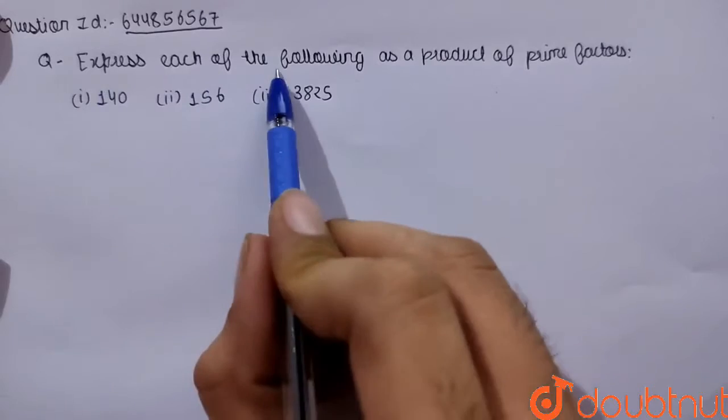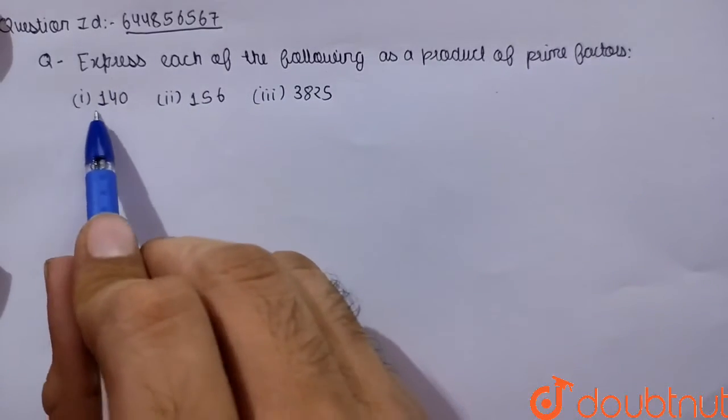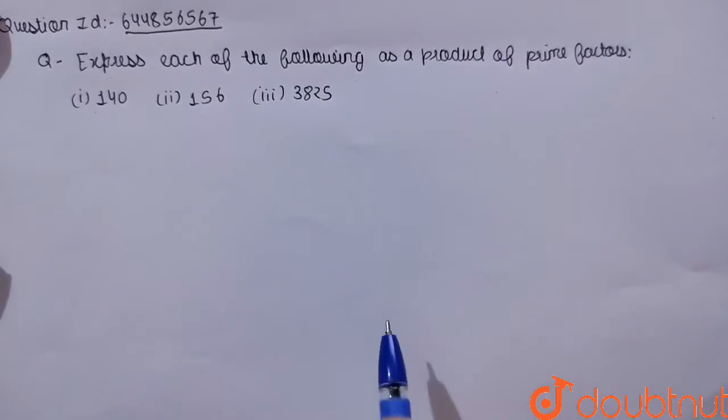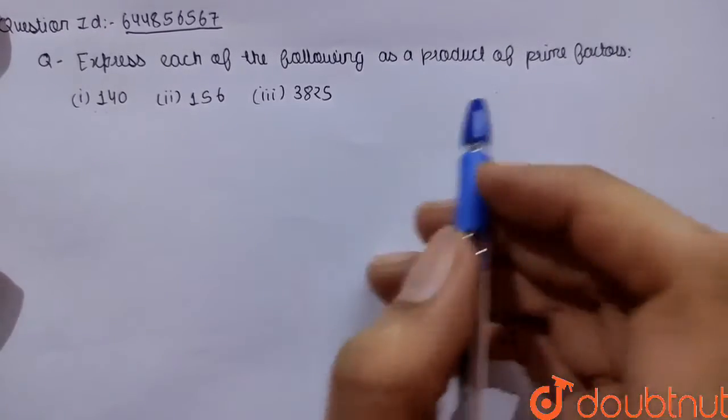The given question is express each of the following as the product of its prime factors. We are having 140, 156 and 3825. Now we have to express it in the form of prime factors.